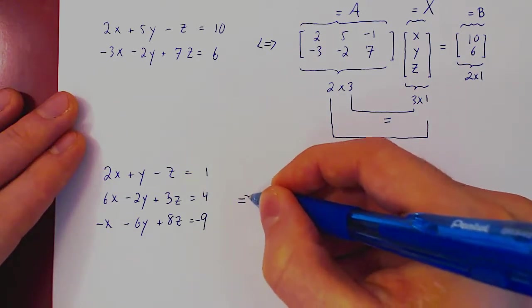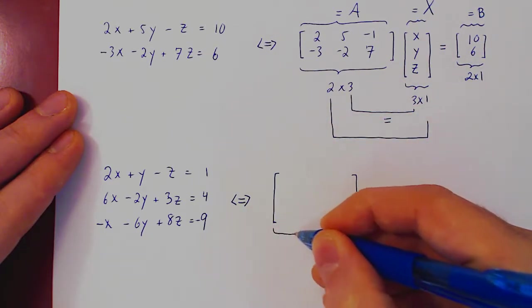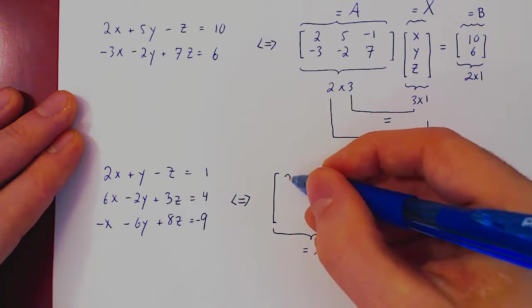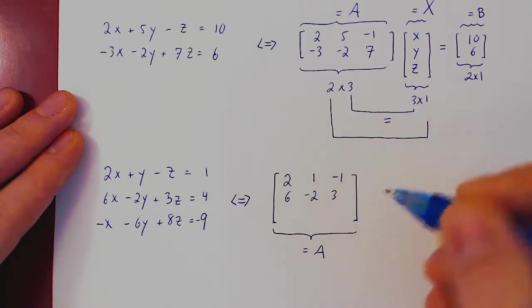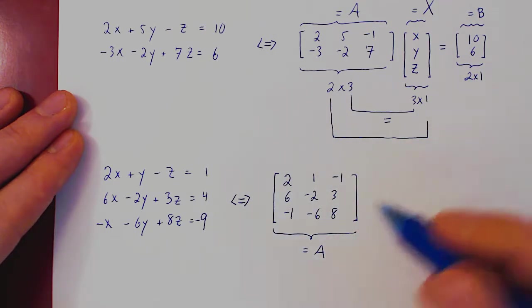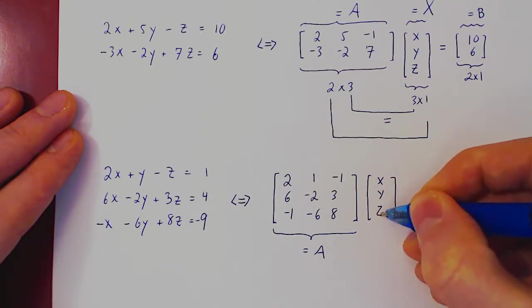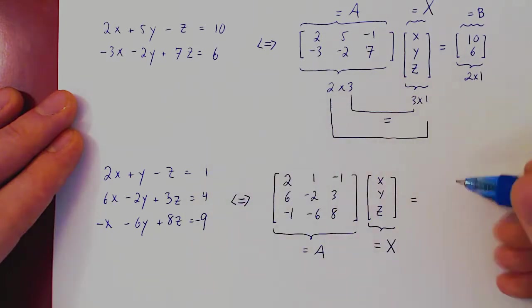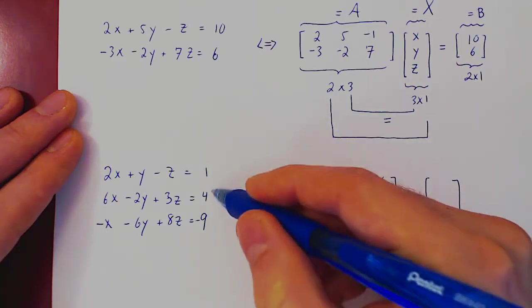Let us rewrite this in the form of a matrix equation. So A, matrix of coefficients, therefore 2, 1, negative 1, the first row. Second row, 6, negative 2, 3. And the third row, negative 1, negative 6, positive 8. Times the column of variables, here we have three variables, X, Y, and Z. We call this, as always, uppercase X, equals a column of constants, again a single column with three entries: 1, 4, negative 9.